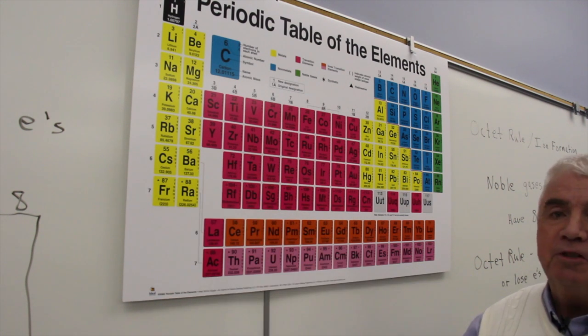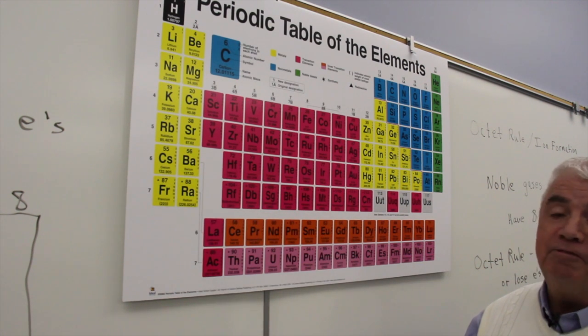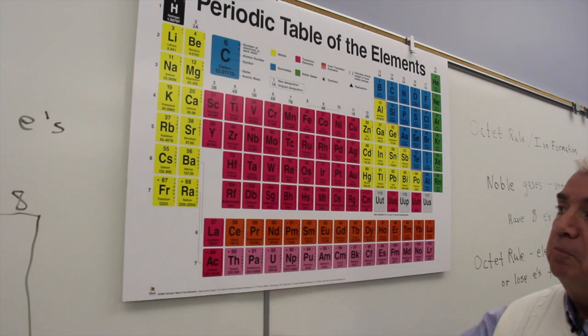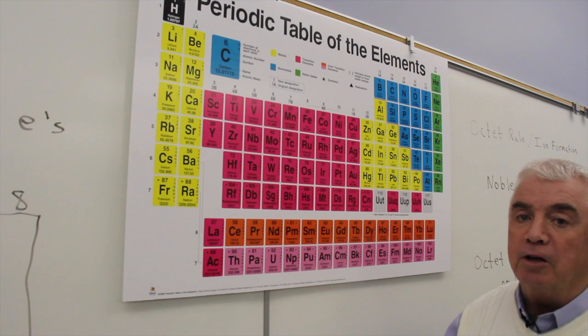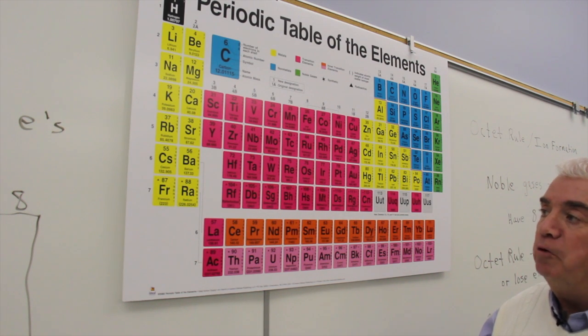Element 56 is barium. It has a total of 56 electrons, but because it's in group 2A, it only has two outermost electrons, two valence shell electrons.